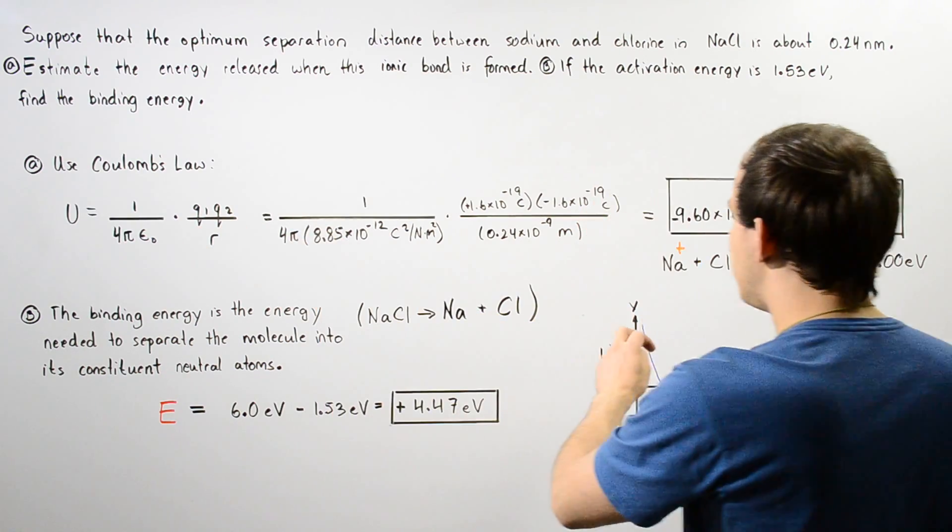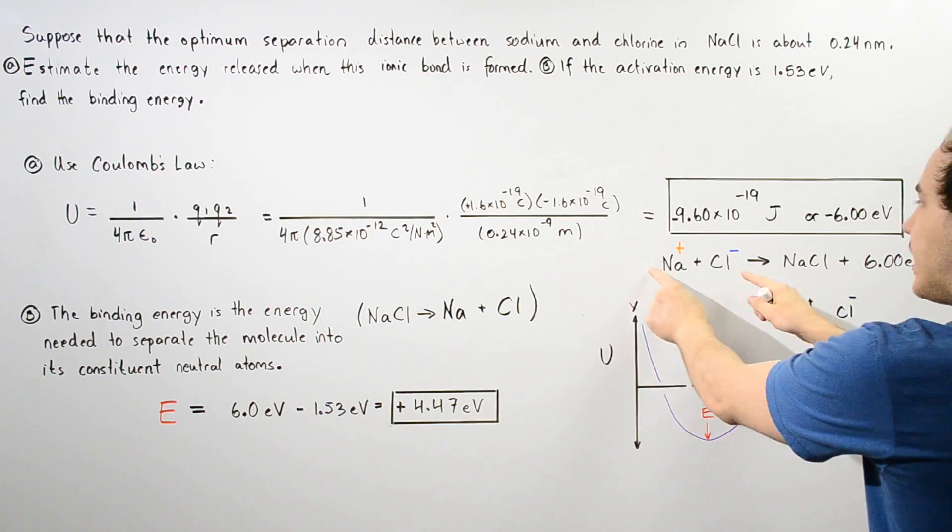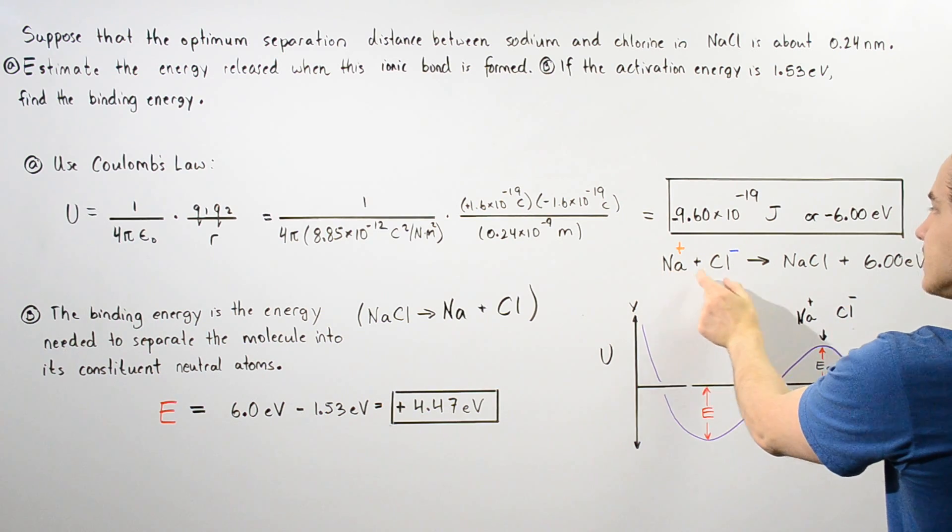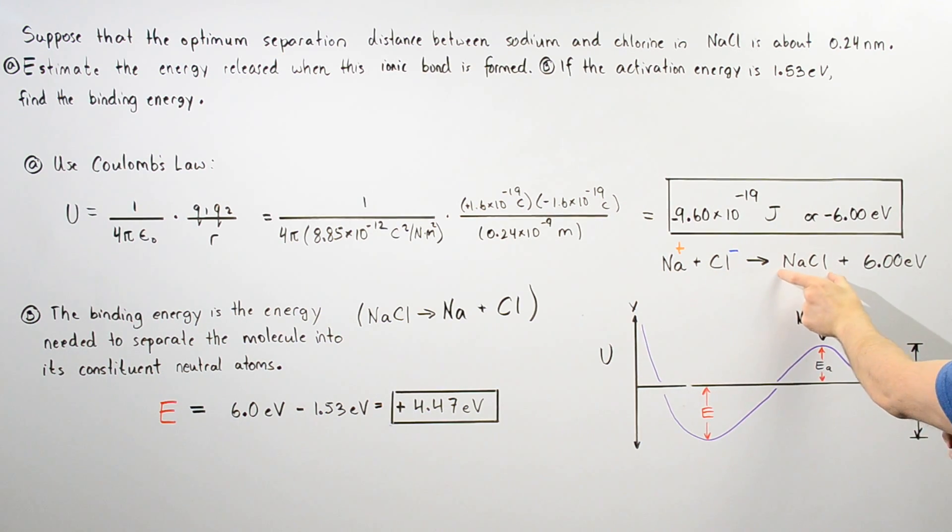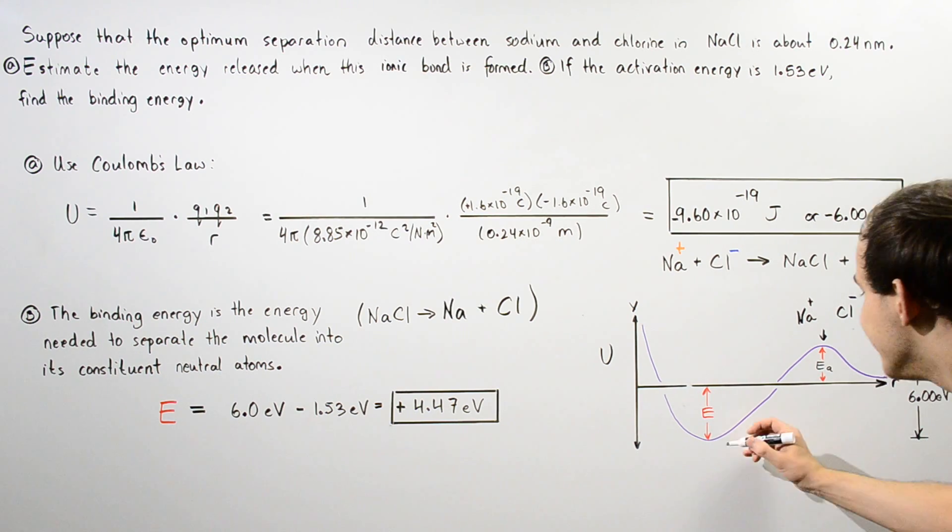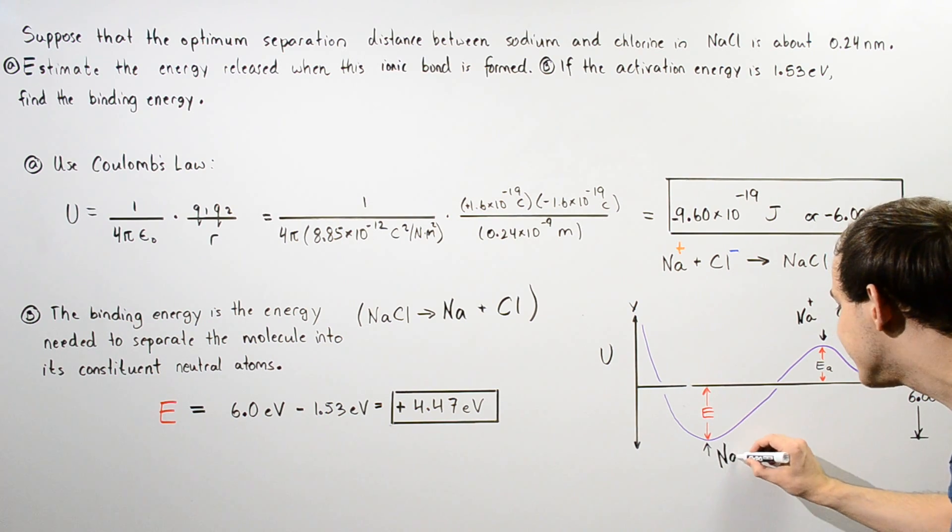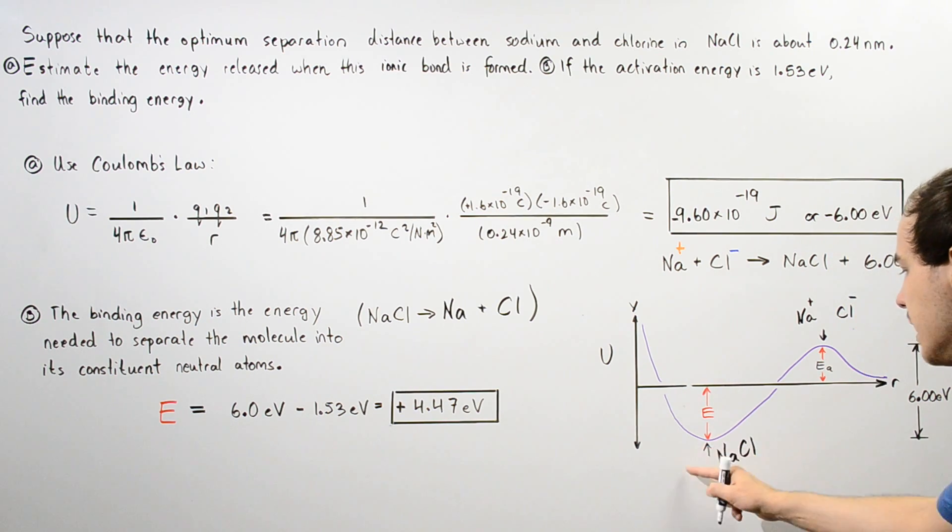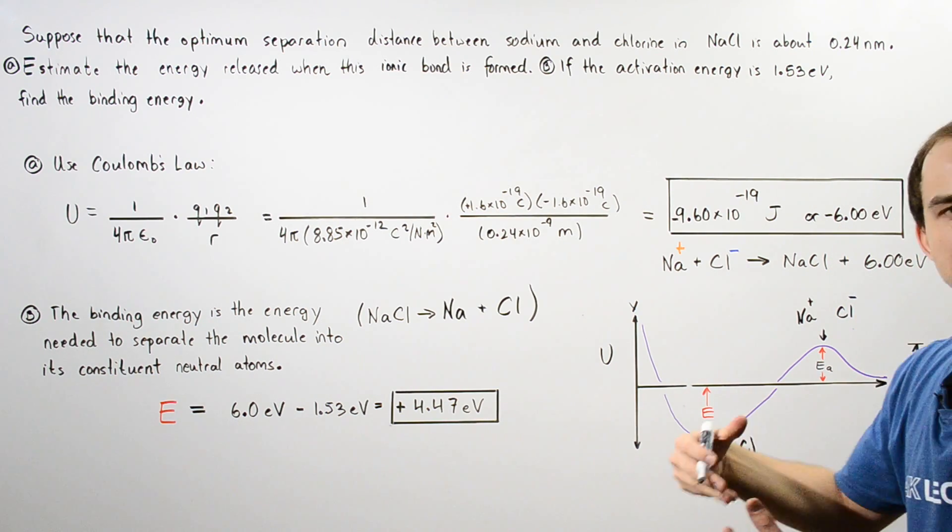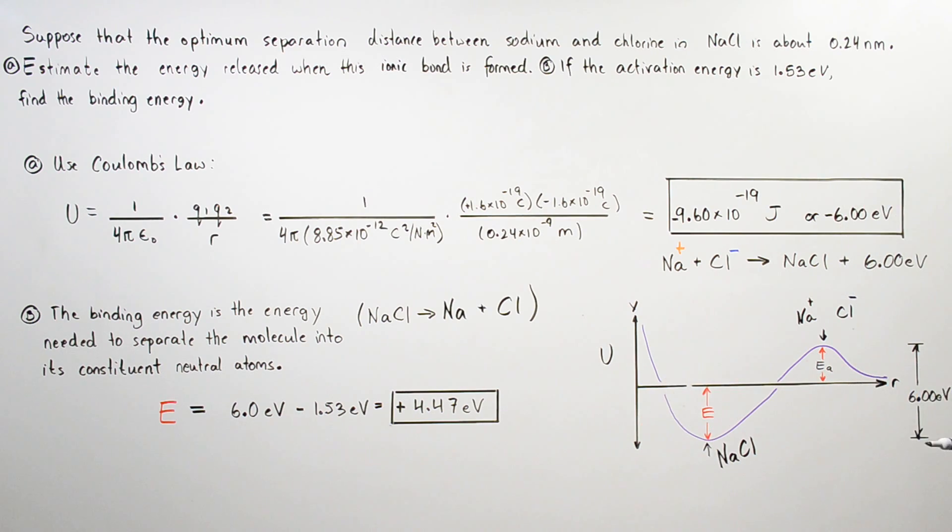In part A, we calculated that when we go from Na+ and Cl- to this compound, this molecule, six electron volts are released. This bump corresponds to when our Na is connected to our Cl, when our molecule is actually formed. That means this distance here gives us our total energy, six electron volts that we calculated in part A.